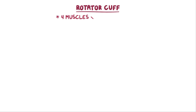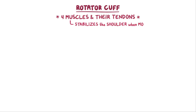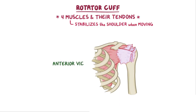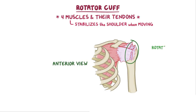The rotator cuff refers to a group of four muscles and their tendons, which help to stabilize the shoulder when it's moving, particularly during rotational motion. A rotator cuff tear is when one or more of the tendons of the muscles of the rotator cuff are torn.